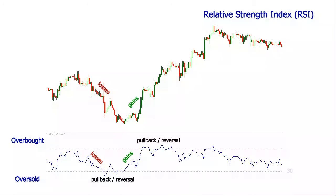The values many traders are watching are the 30 and the 70 levels. Values below 30 are commonly interpreted as indicating an undervalued condition, also known as oversold. Values above 70 are commonly interpreted as indicating an overvalued condition, also known as overbought.